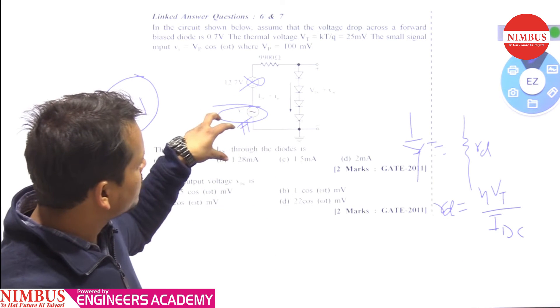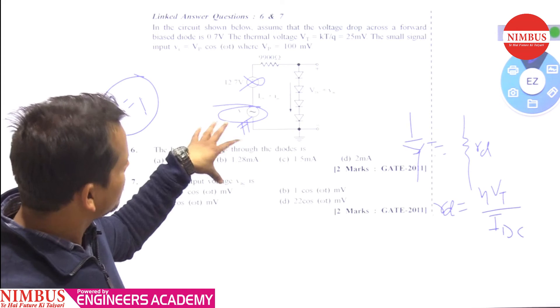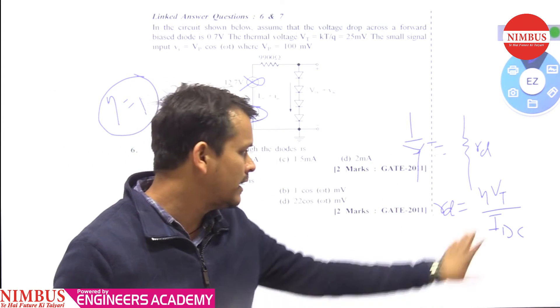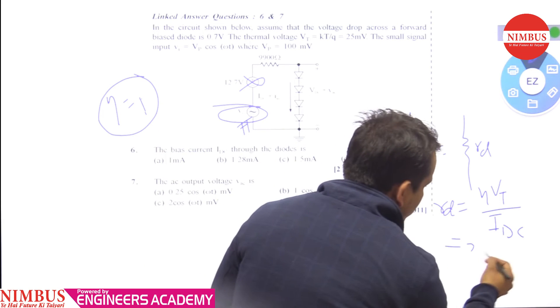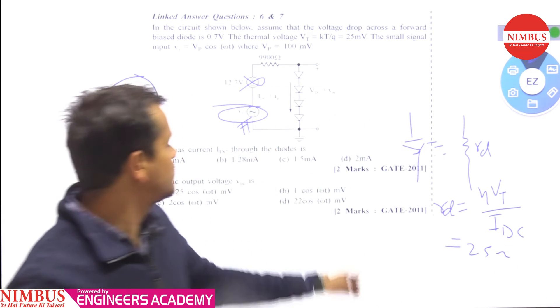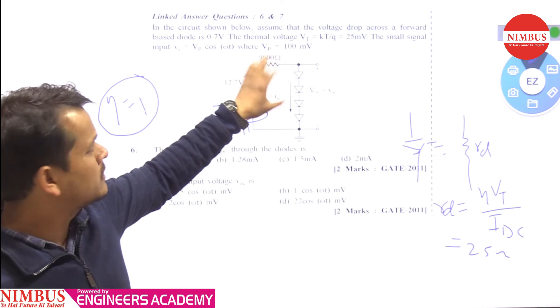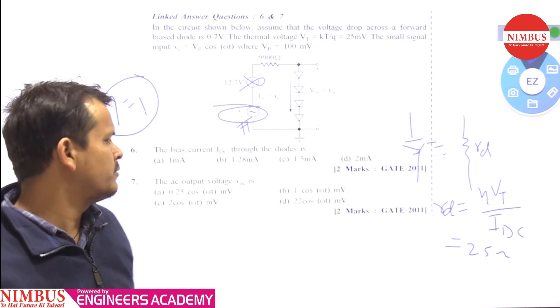For small signal analysis, we replace each diode with its resistance Rd. From the calculation, Rd equals 25Ω. With 4 diodes, the total resistance is 100Ω. Applying voltage division, we get the AC voltage.